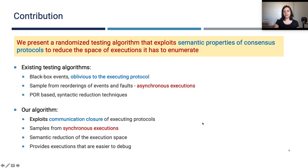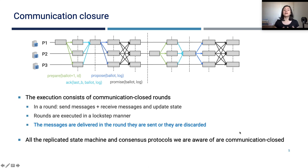So we exploit communication closure. What is communication closure? Consensus protocols are designed in a way that each process executes a sequence of rounds in which they send messages, receive messages, and update their state. For example, here in the first round, the leader process sends prepared messages, the receivers receive it and update their state accordingly.